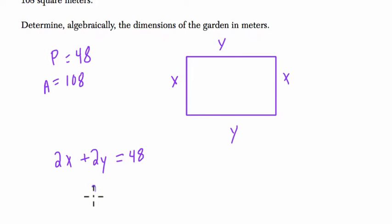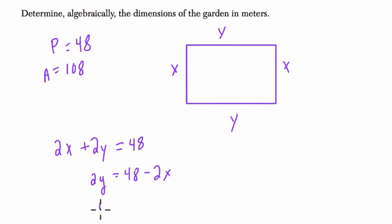That's typically how we're seeing these things here. So 2y equals 48 minus 2x, and divide both sides by 2, and y equals 24 minus x.